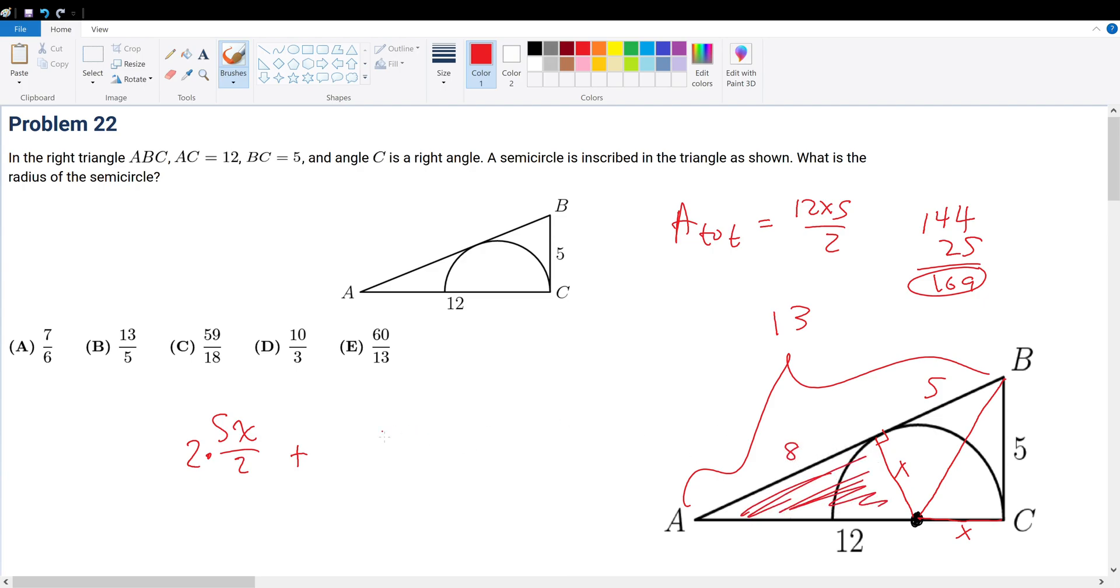So the area of this triangle right here must be 8 times X divided by 2. This must give the total area of 12 times 5 divided by 2. Solving for X and we will be done.